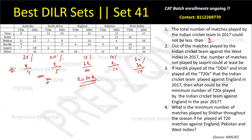Now let's find further constraints. For T20s, Shikhar has played 11 against Australia, so there are at least 11 T20s. For ODIs, Jaspreet has played 18 ODIs against Australia. So India has played at least 11 + 18 = 29 matches against Australia, meaning x/4 ≥ 29. Similarly, for South Africa: 12 + 24 = 36, so x/5 ≥ 36. For England: 18 + 14 = 32, so 3x/20 ≥ 32.